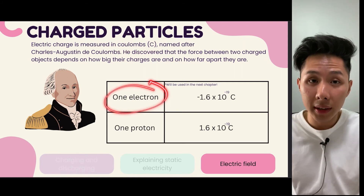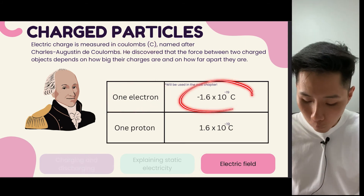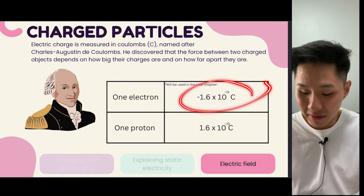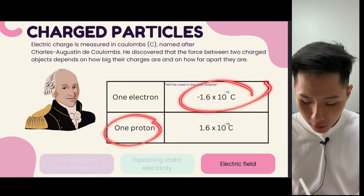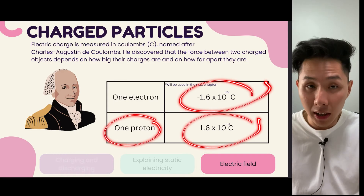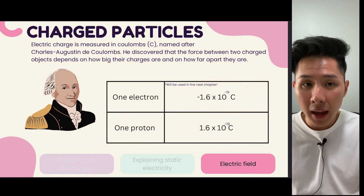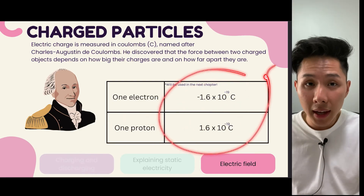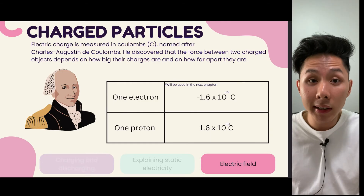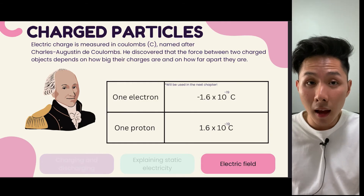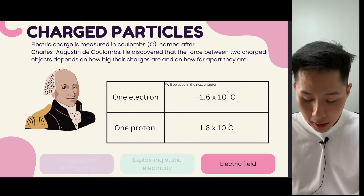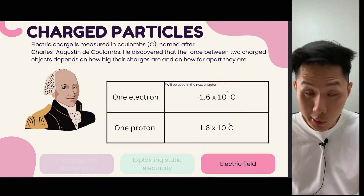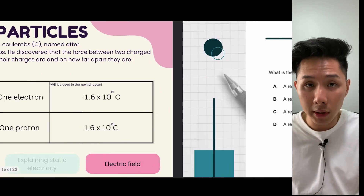He quantified these charges using the unit coulomb. For one electron, it is worth negative 1.6 times 10 to the power of negative 19 coulombs, and a proton is the same value but in positive form. Knowing this is important as it helps us understand electrical quantity in the next chapter. For now, just know that this is the number used to represent electrons and protons.